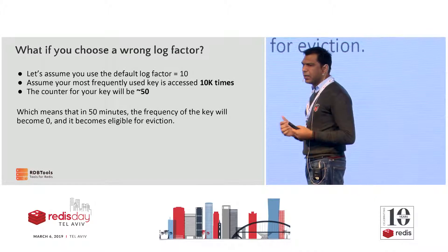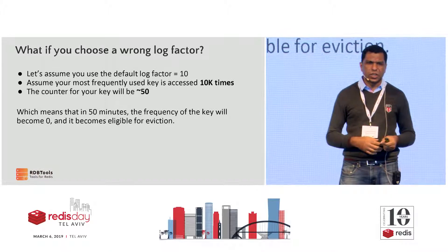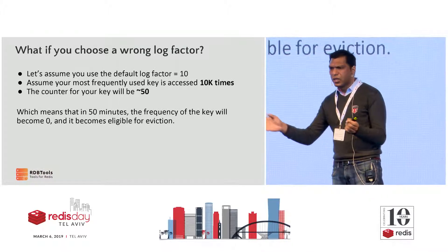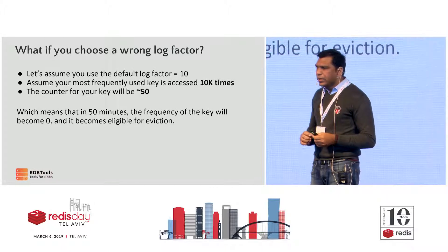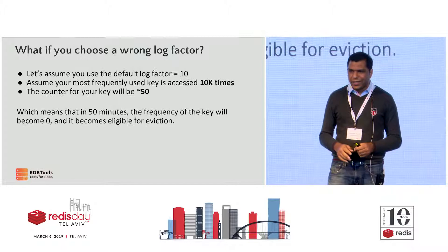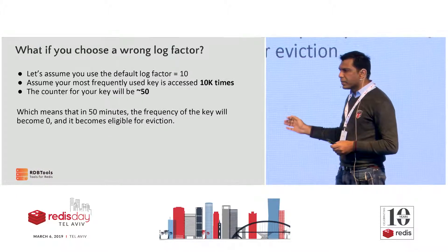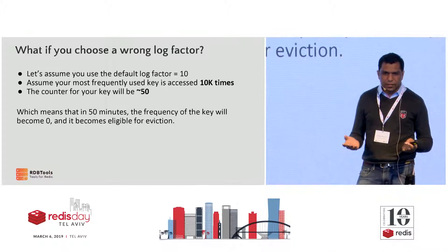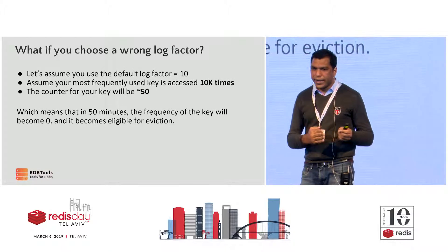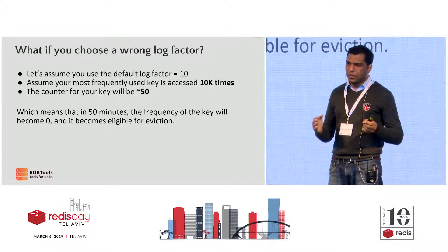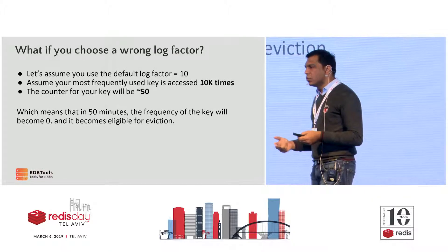What happens if you choose a wrong log factor? Assume your default log factor is 10 and your most frequently used key is accessed about 10,000 times in a 4-hour window. If the frequency of access is 10,000, the counter Redis has internally would be about 50. Which means even though your object is accessed 10,000 times, the value is only 50, and in about 50 minutes the counter will decrement down to zero. You are essentially not using the complete range, and as a result your object becomes a candidate for eviction much sooner than it should.